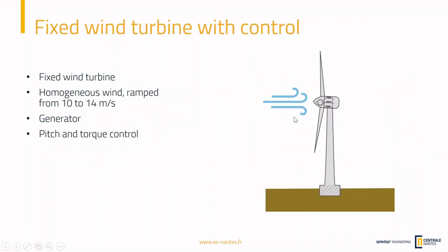We are trying to model a fixed wind turbine with a generator and a controller. We will control the turbine in pitch and torque. The wind we will use for this example will be a ramped wind from 10 to 14 meters per second, homogeneous in all the simulation area. This way we can see how the control evolves with increasing wind.